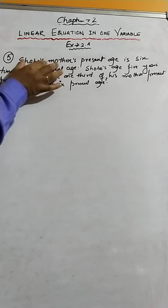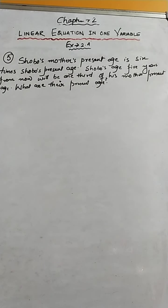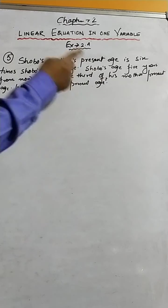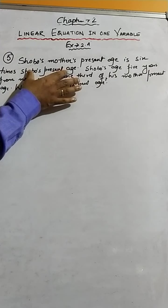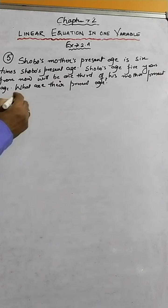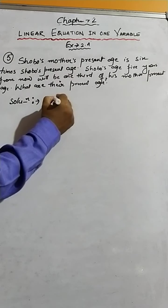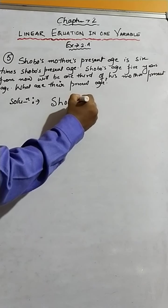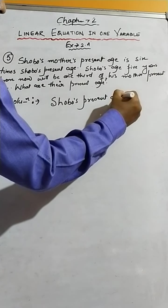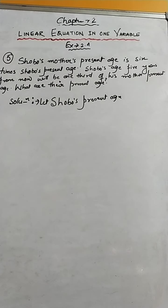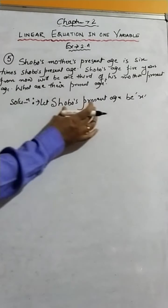Question number five: Shobu's mother's present age is six times Shobu's present age. So Shobu's mother's present age is compared with Shobu's present age. The first thing we have to do is let Shobu's present age be X, since we do not know it.